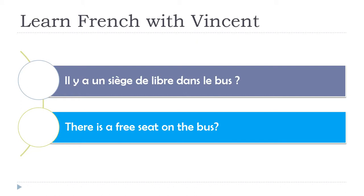So with 'il y a', keep in mind there are three options. The most polite and correct one is the 'y a-t-il' structure. The second option is to introduce 'est-ce que' and keep the original order. The third option is to keep the sentence as 'il y a' but raise your voice at the end. Merci beaucoup!